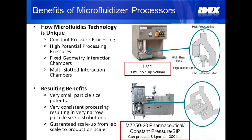Here is a summary of the key features and benefits of our technology. The microfluidizer processor offers constant pressure processing with a very high processing potential, up to 30,000 PSI. Our core technology is the fixed geometry interaction chamber, and multi-slotted interaction chambers are available for scaling up. These features result in a very small particle size potential, consistent processing with very narrow particle size distribution, and guaranteed scalability from lab to production scale.